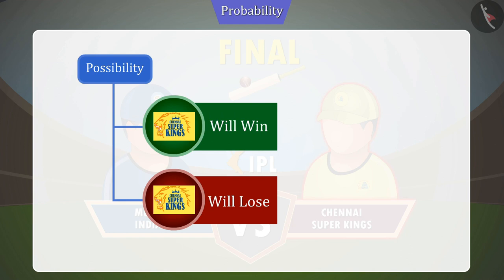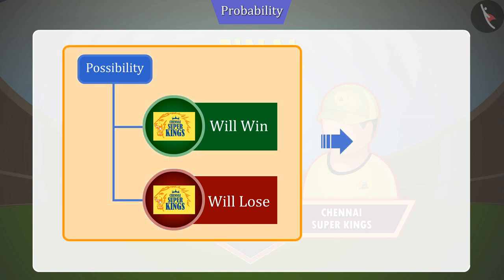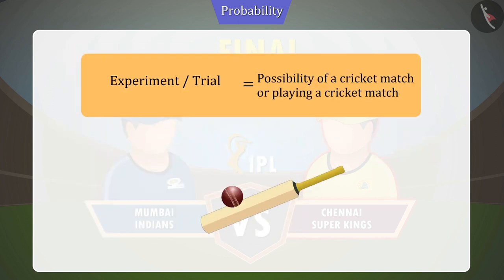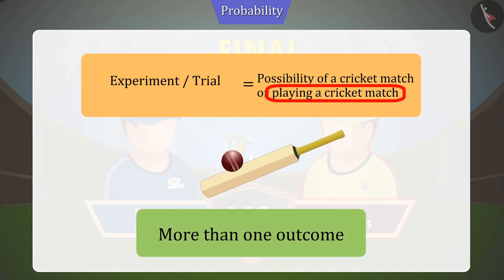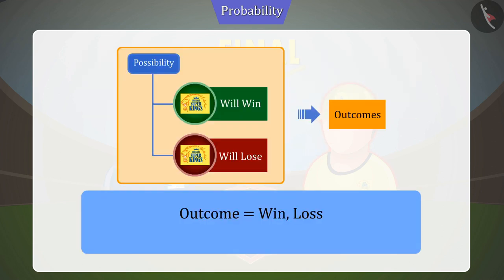We call these possibilities the outcome. The possibility of playing a cricket match is called an experiment or trial. Playing a cricket match is an activity that can have more than one result. Therefore, we can say that the outcome is the possible result of an experiment.